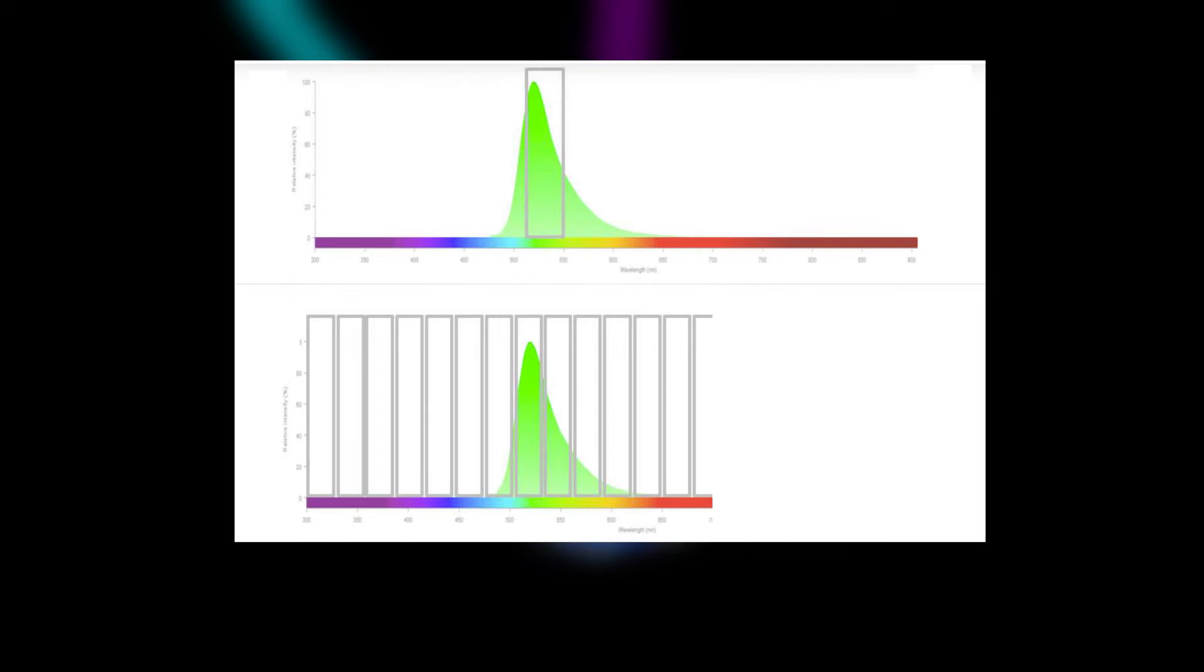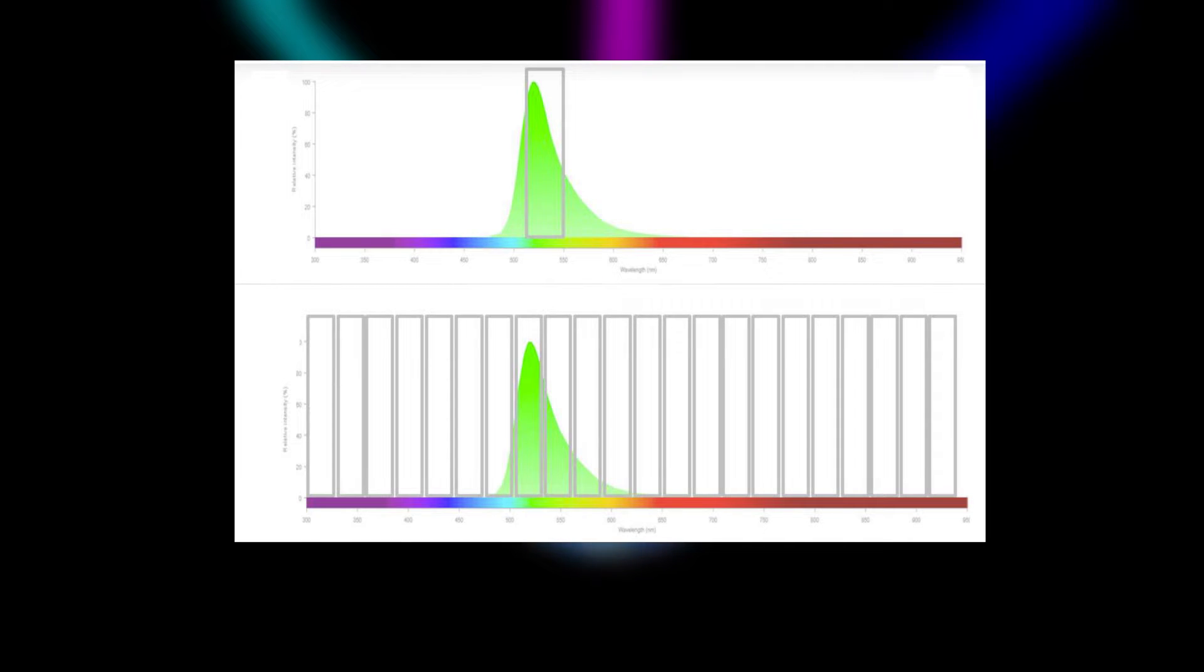Spectral flow cytometry detects more fluorochromes per laser by measuring light across the complete emission range for each fluorescent molecule present in a sample.